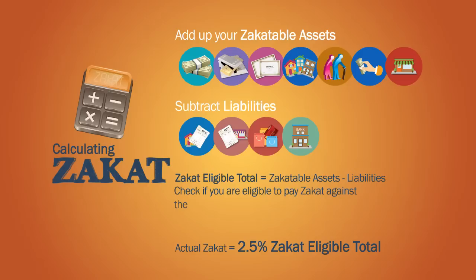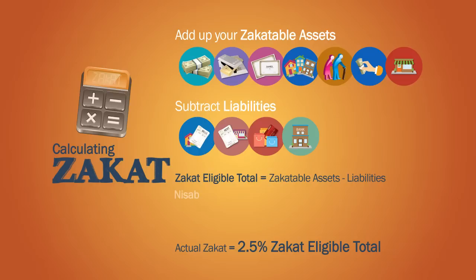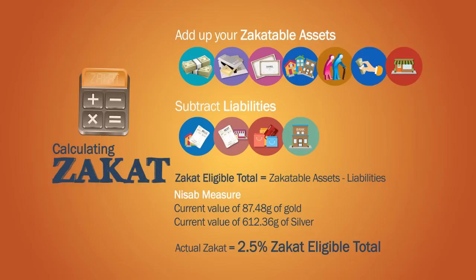After subtracting your liabilities from your assets, you can now check if you are eligible to pay zakat against the current value of nisab. If you have only gold assets, then the nisab measure for gold must be used, which will be the current value of 87.48 grams of gold.